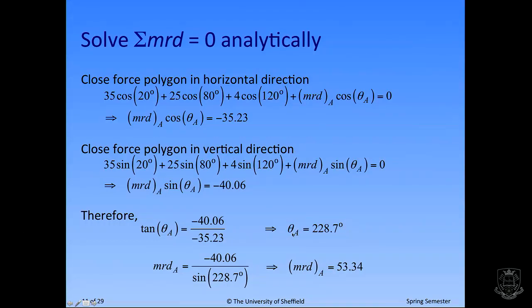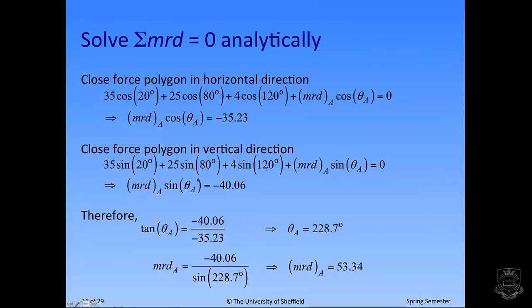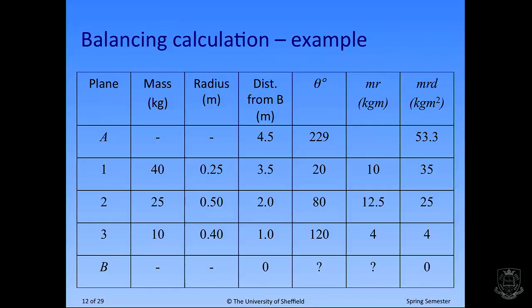Once you've got this angle, you can go back and use one of the component expressions to work out what the MRD value is - in this case it turns out to be 53.34. So then you can plug that back into the overall table. We've now worked out two extra pieces of information: the MRD value and the angle as well.